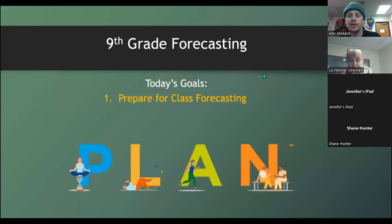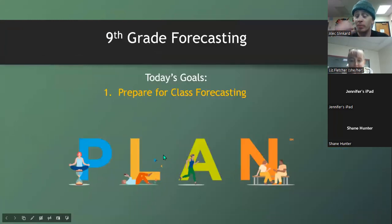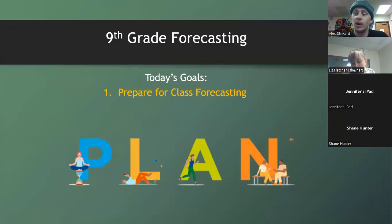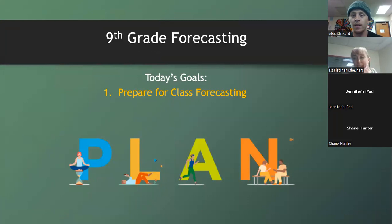We are recording. Our plan for today is we're going to be talking about forecasting. All of you are parents of current ninth graders, so we'll be looking at forecasting for next year for 10th grade. My name is Alex Slinkard Galbin, I'm a school counselor here at Ashland High School — I have letters A through HK. And I'll let Miss Liz introduce herself: my name is Liz Fletcher, and if your student has a last name that starts with P through Z, they're on my alpha.